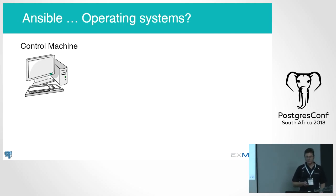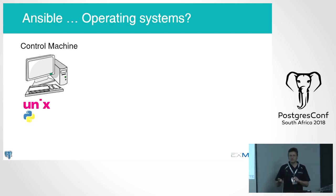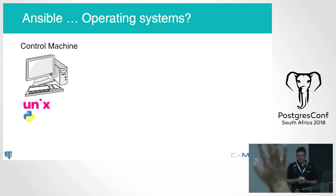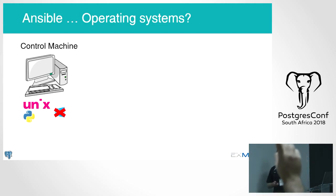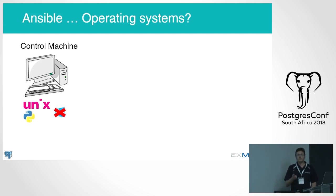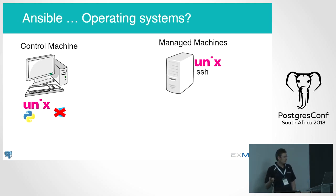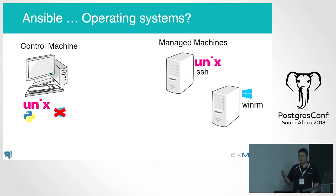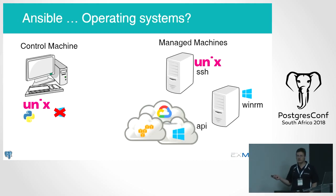Regarding operating systems: the control machine that runs the playbooks needs a Unix-like system — Linux, macOS, or similar — with Python installed. Native Windows is not currently supported as a control machine, though there is a way to get it running on Windows. The managed machines can be Unix-like via SSH, Windows via WinRM, and a large number of cloud resources including Google, AWS, Azure, and others — check the documentation for the full list.